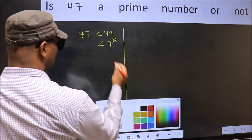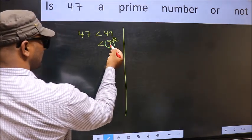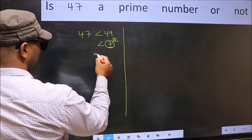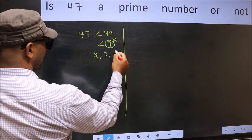Now, you write all the prime numbers less than this number. They are 2, 3 and 5.